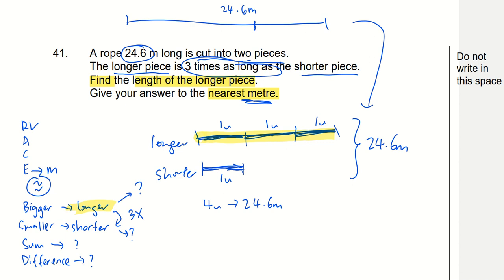The longer piece will be three units. So let me find one unit first. So 24.6 divided by 4. If you have a decimal point here, don't forget the decimal point. I'm going to include the zero to continue with my division. So one unit is 6.15 meters. At this point, I don't do any rounding yet.